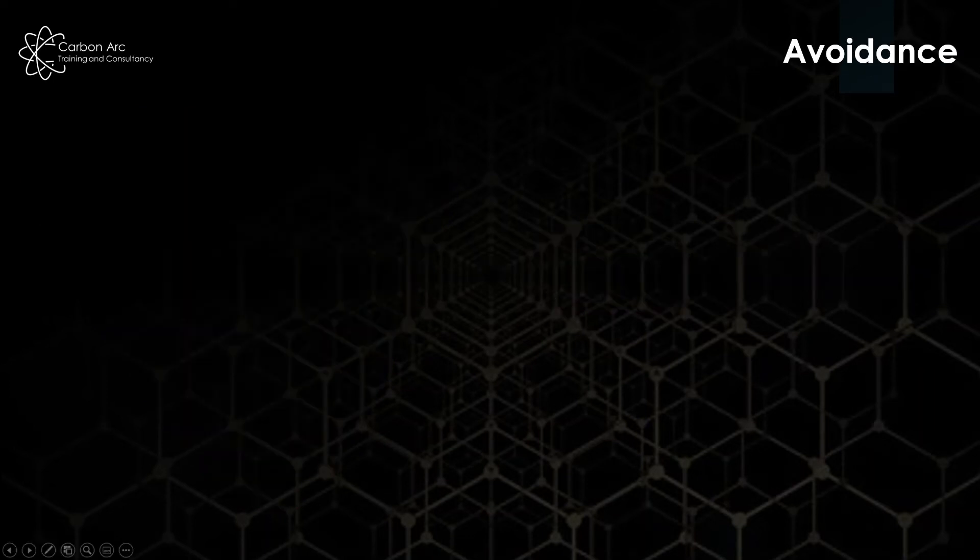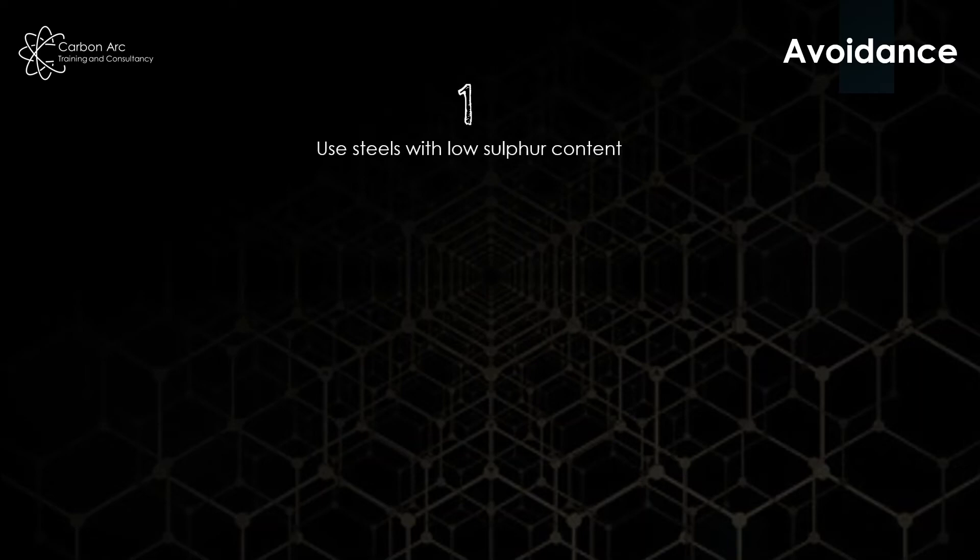So onto our avoidance methods. First off, get rid of our sulfur. If we can reduce the sulfur levels down we won't have the failure. Exactly the same as if we have hydrogen-induced cold cracking, we want to drop the amount of hydrogen within our system. Best way of getting rid of any type of failure.